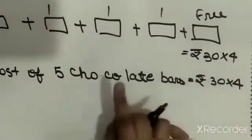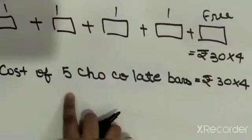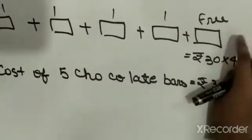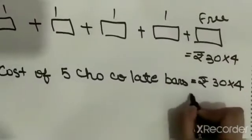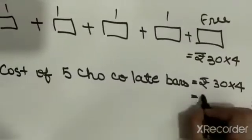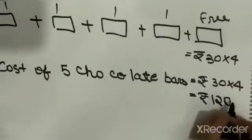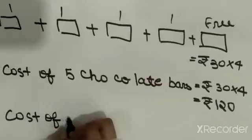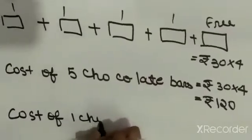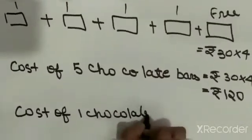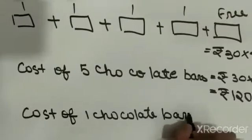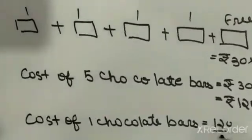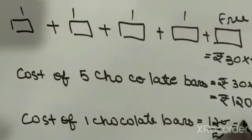If you are wondering why I have taken 5 in the statement and 4 in the solution, that is because don't forget that 1 is free of cost. So Rs. 30 into 4 equals Rs. 120. Now let's find the cost of 1 chocolate bar. Rs. 30 into 4 equals Rs. 120 divided by 5, which is equal to Rs. 24.